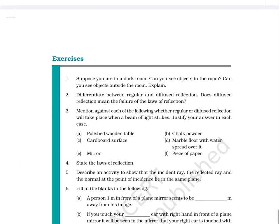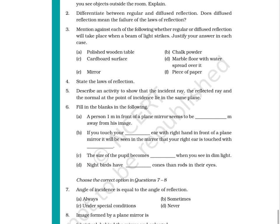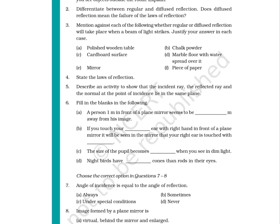Exercises. 1. Suppose you are in a dark room. Can you see objects in the room? Can you see objects outside the room? Explain. 2. Differentiate between regular and diffused reflection. Does diffused reflection mean the failure of the laws of reflection? 3. Mention against each of the following whether regular or diffused reflection will take place when a beam of light strikes: A. Polished wooden table. B. Chalk powder. C. Cardboard surface. D. Marble floor with water spread over it. E. Mirror. F. Piece of paper. Justify your answer in each case.